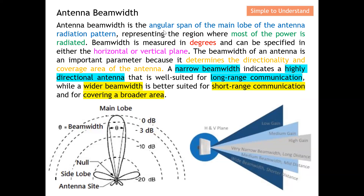Antenna beam width is the angular span of the main lobe of the antenna radiation pattern, representing the region where most of the power is radiated. As you can see here, this is the main lobe because most of the power is concentrated here. The angular span shown here is essentially the antenna beam width.